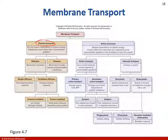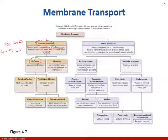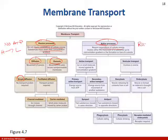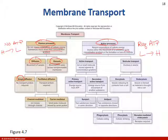Passive process does not require energy — no ATP necessary — and molecules move down the concentration gradient from high to low. Two examples: diffusion and osmosis. Active process requires ATP, and you move up the concentration gradient from low to high. We'll focus on primary active transport and the sodium-potassium pump.